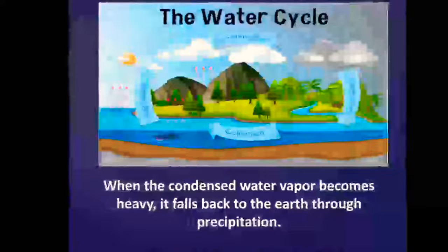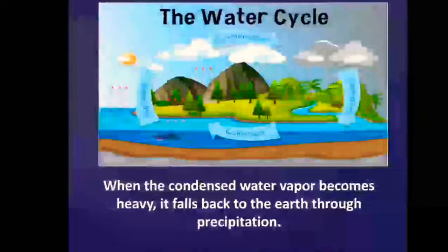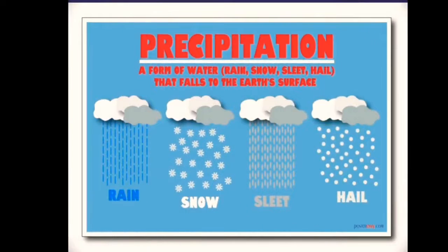So, from evaporation, magkakaroon na ng condensation. At syempre, nang bibigat yung water doon sa may clouds, nagiging precipitation. Precipitation is a form of water through rain, snow, sleet, and hail that falls to the earth's surface.